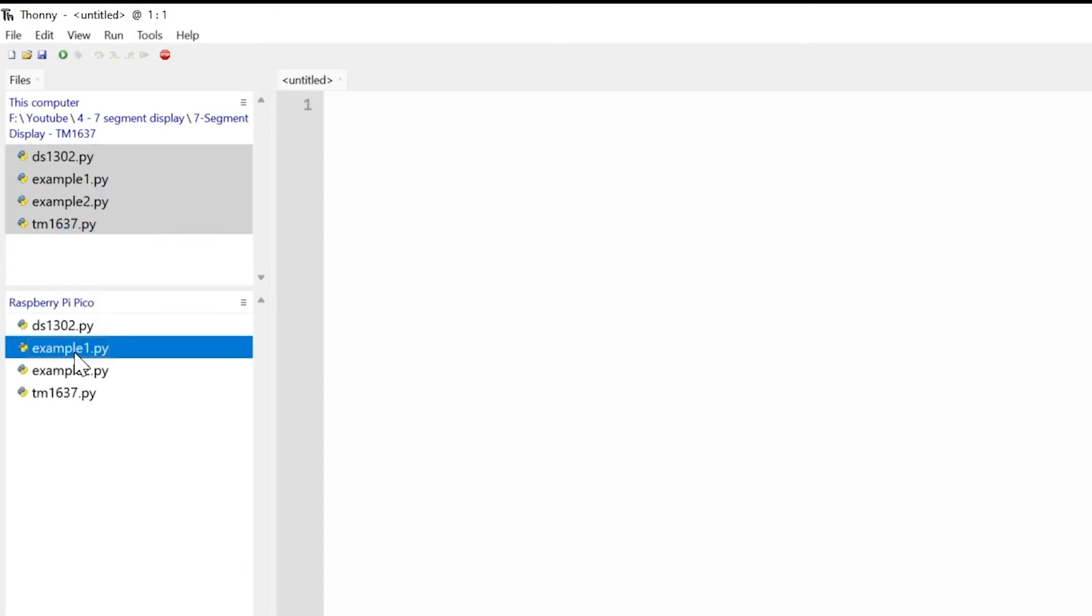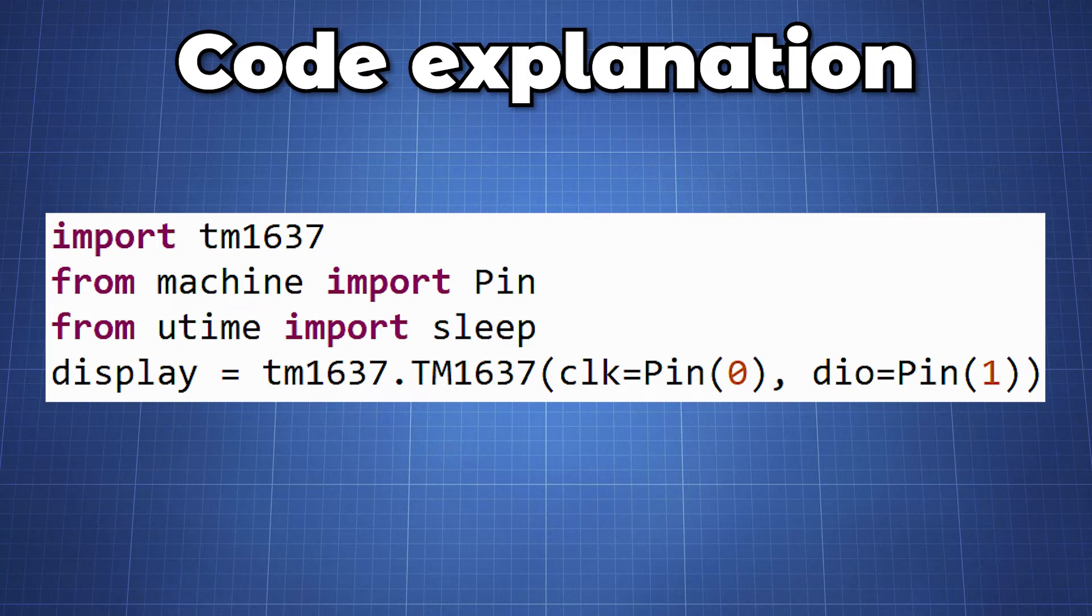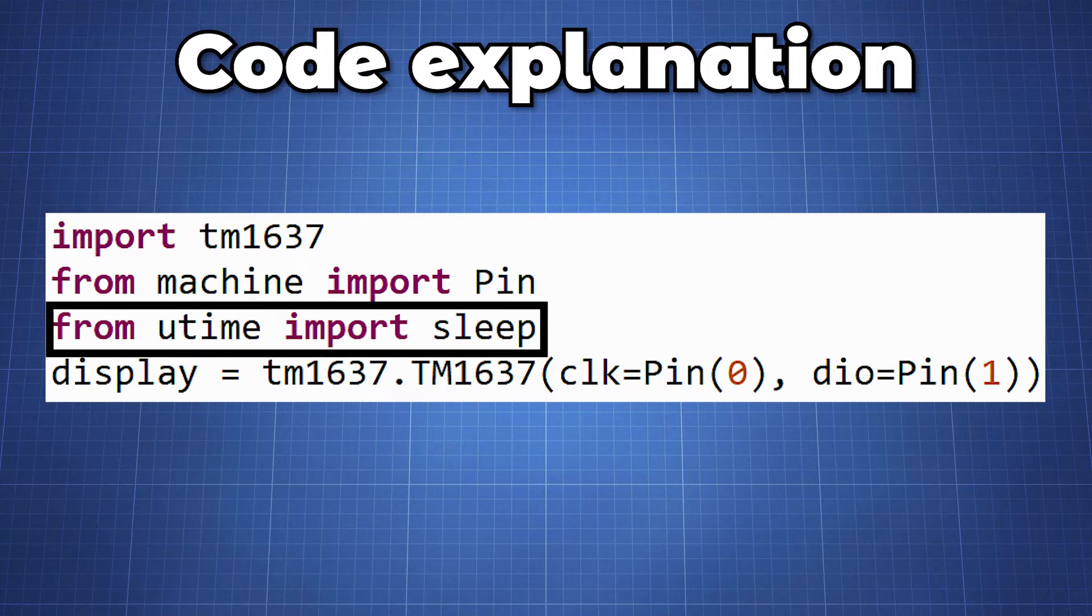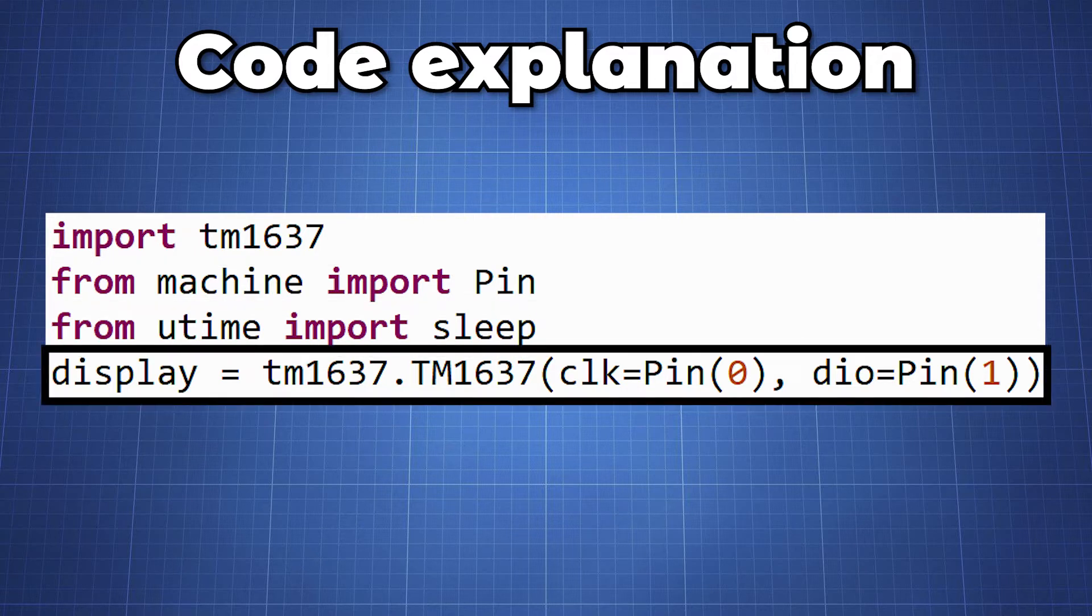Let us take a look at example one together. We import all the necessary libraries, the TM1637 driver library, Pin from machine, and utime to create a delay between the different functions. We will initialize the display by creating a variable display and setting it to the library and to correct pins for the CLK and DIO pins.